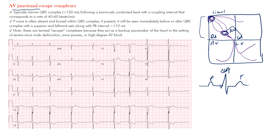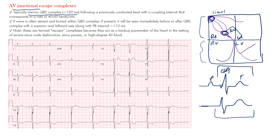In a junctional escape beat you have a beat with no preceding P wave, then the normal complex follows. Everything below — in the ventricles — should be the same, because the impulse travels down the same conduction pathway. That's why you typically have that narrow QRS complex, and the T wave that follows should also be similar.